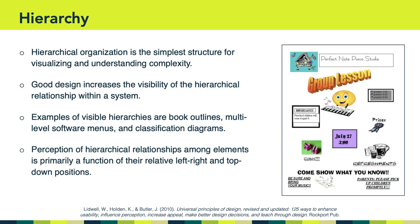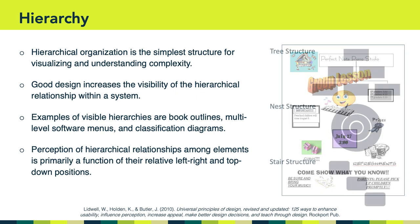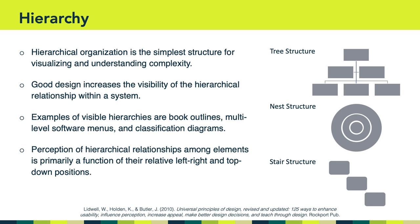The last principle we researched was hierarchy. We learned that hierarchical organization is perhaps the simplest structure for visualizing and understanding complexity. Good visual design increases the visibility of the hierarchical relationship within a system, and we encounter visual hierarchies all the time — for example, in book outlines, multi-level software menus, and classification diagrams. Relating to what we learned about layout, perception of hierarchical relationships among elements is primarily a function of their relative left-to-right and top-to-bottom positions. Some common hierarchical organizations used in design are tree structures, nest structures, and stair structures.